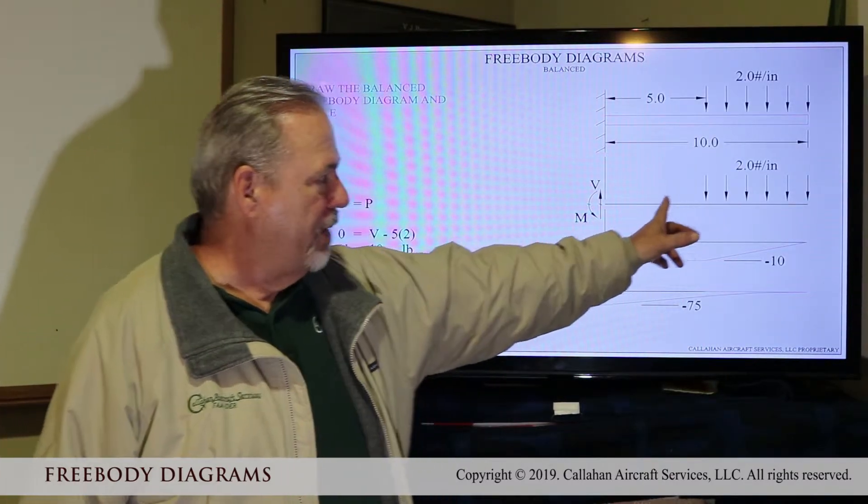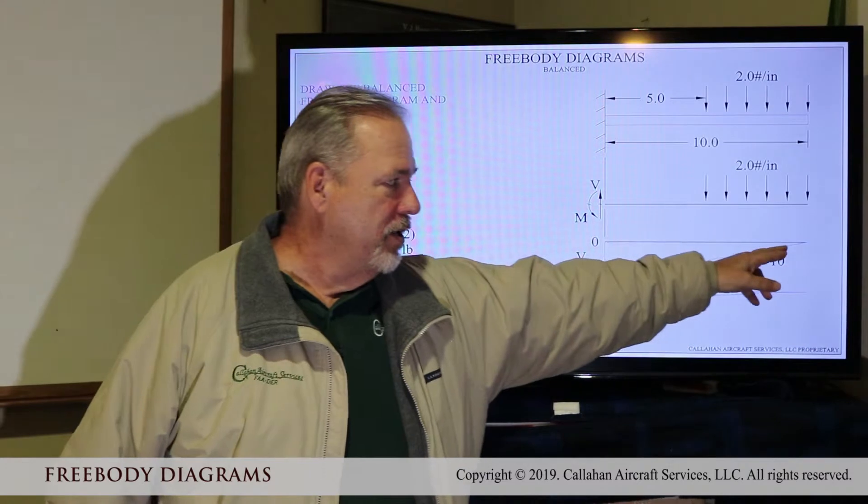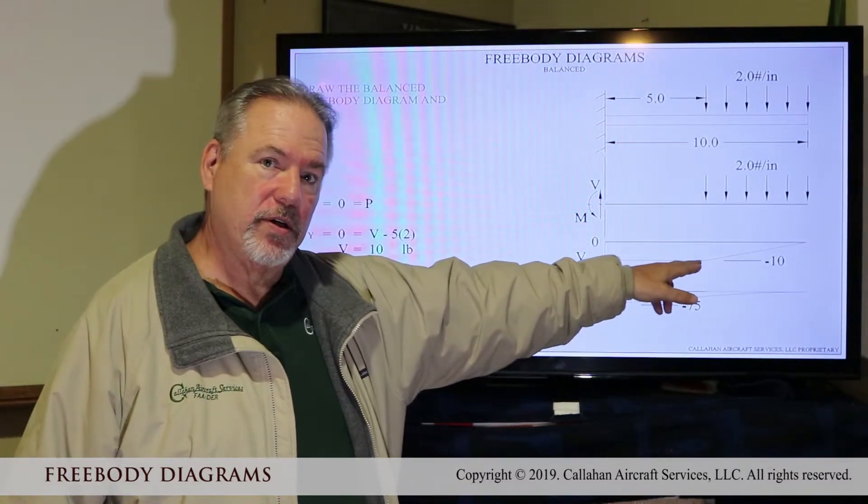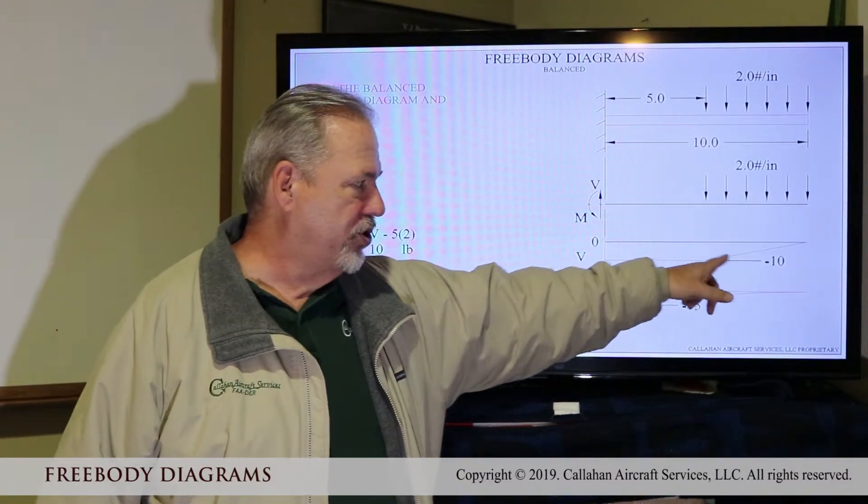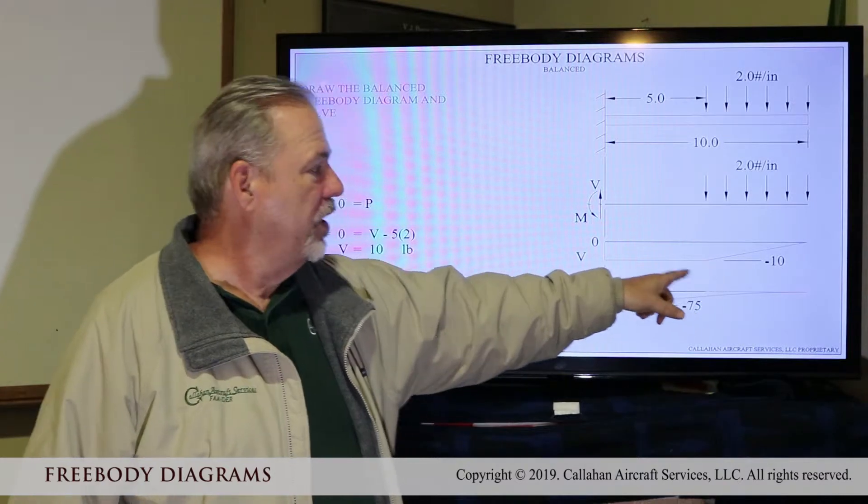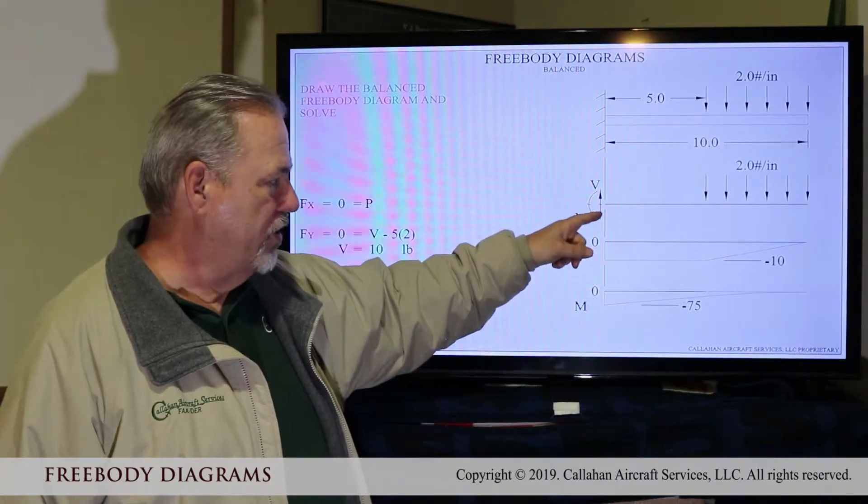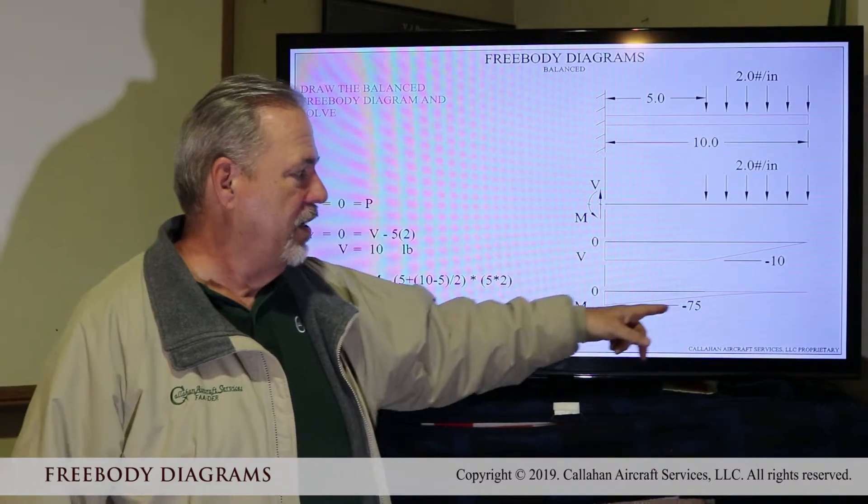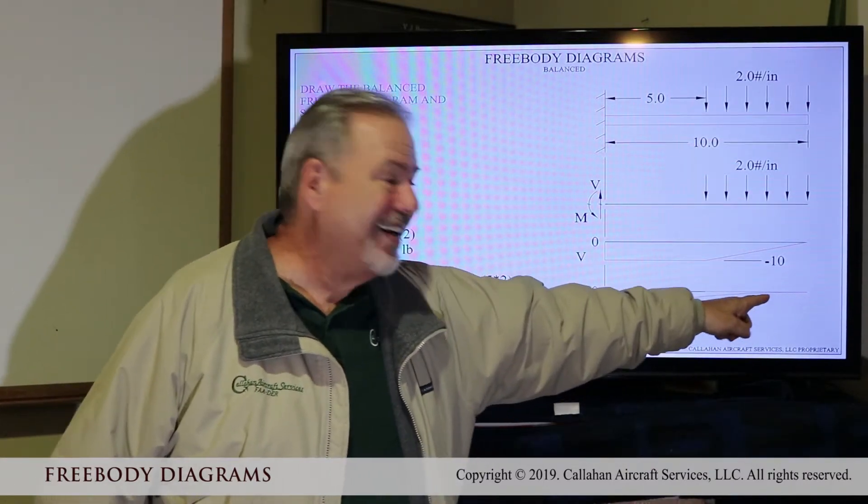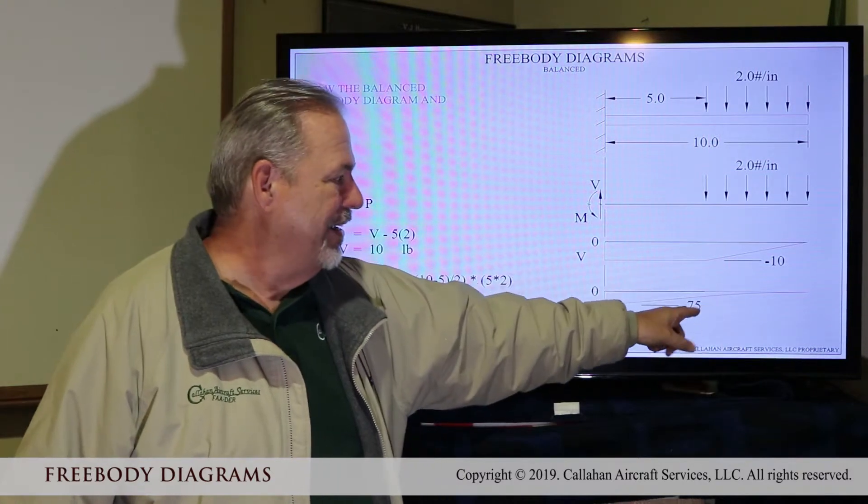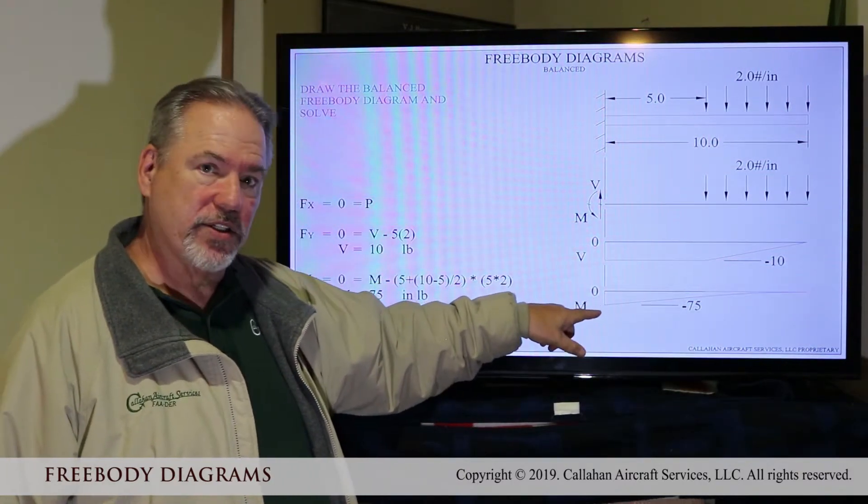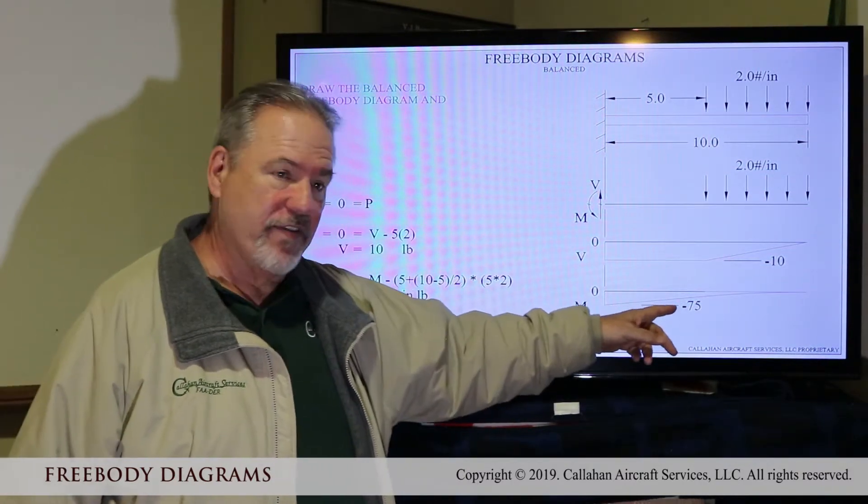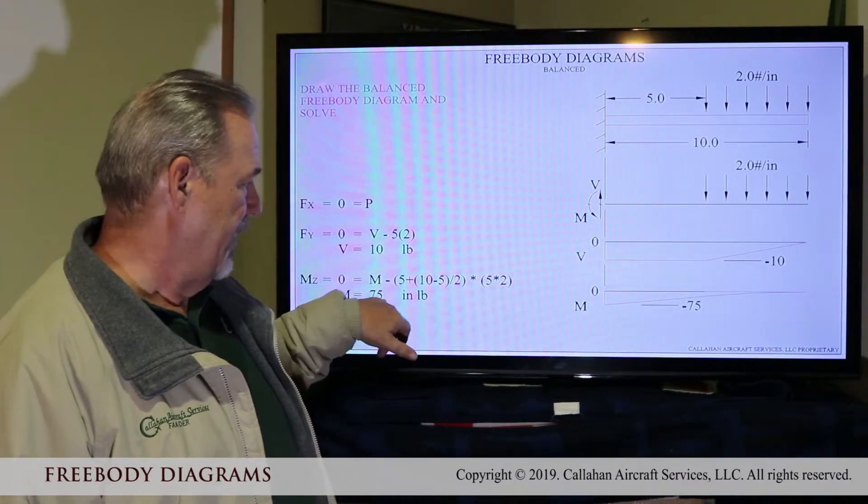Here's your balanced free body. Slope gets ten pounds, comes across constant, goes up ten pounds. So you're positive ten pounds at the root. Moment starts at zero, exponentially grows, and then it goes on a constant slope till it's at 75 inch pounds.